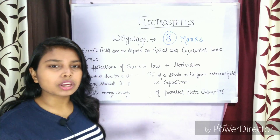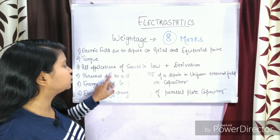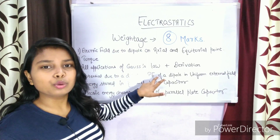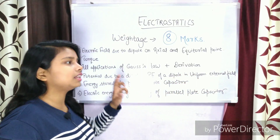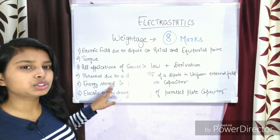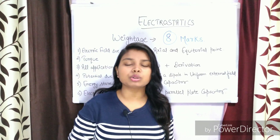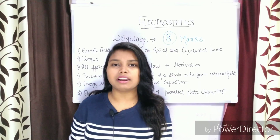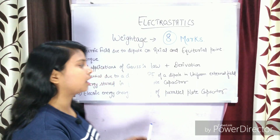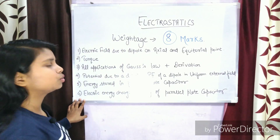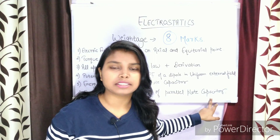Now moving to chapter number 2. The first derivation in chapter 2 is potential due to a dipole. The second is potential energy of a dipole in a uniform external electric field. After that, the third important derivation is energy stored in a parallel plate capacitor. Capacitor numericals are also important, and you need to cover series and parallel combinations as well as these derivations.